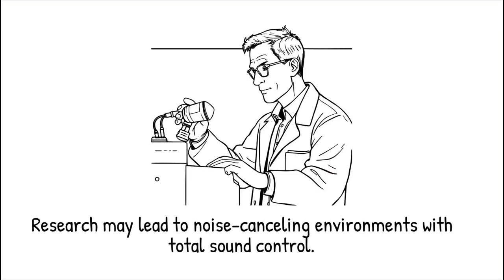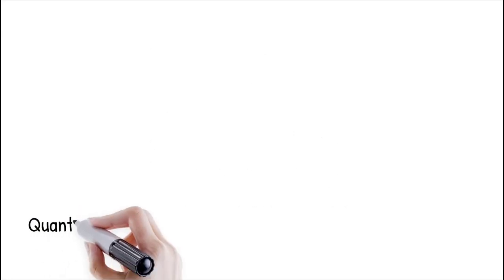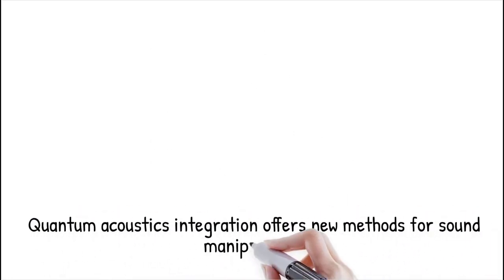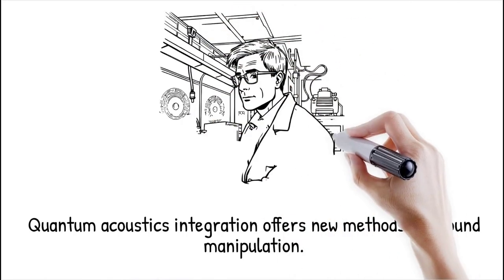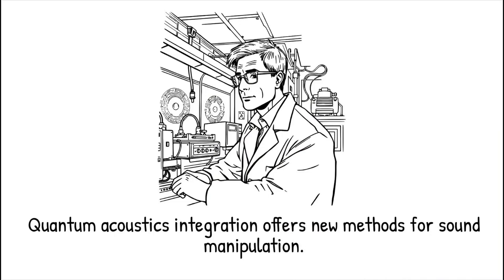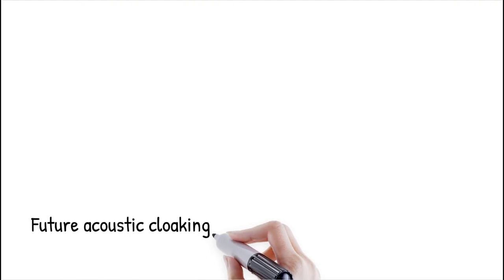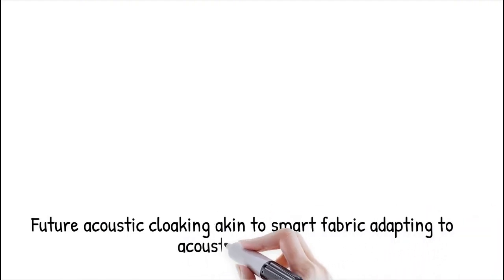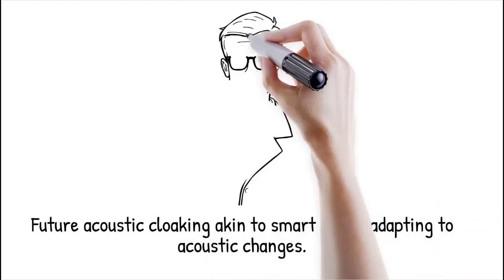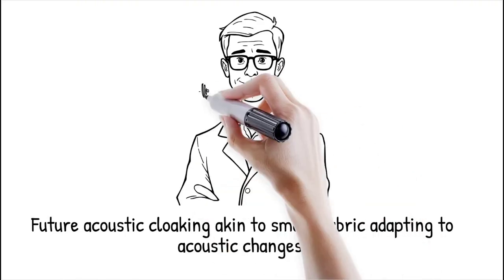Additionally, integration with quantum acoustics and phononic crystals could open up new methods for manipulating sound at the atomic level. Research groups are working on adaptive acoustic cloaks that can change their structure in real time to block out new noise sources as they emerge. The future of acoustic cloaking is like a smart fabric that adjusts itself based on temperature, adapting dynamically to changing acoustic environments.